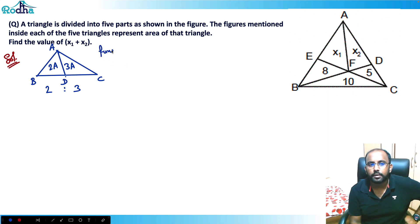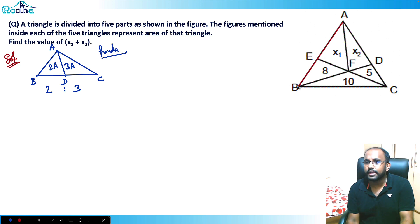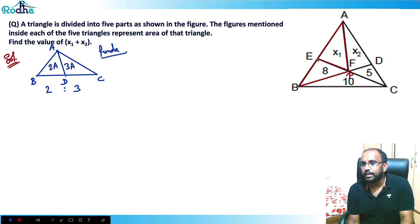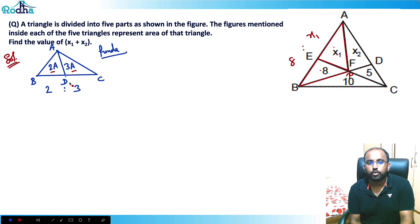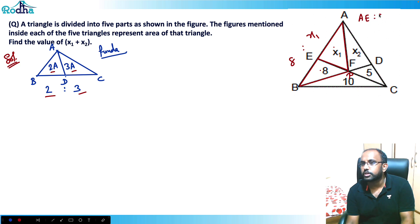Now I can apply this concept to this question. Observe that this is side AB, and this is triangle APB or AEB, where AE is the cevian. The area ratio is x1 to 8, so the side ratio will also be x1 to 8.